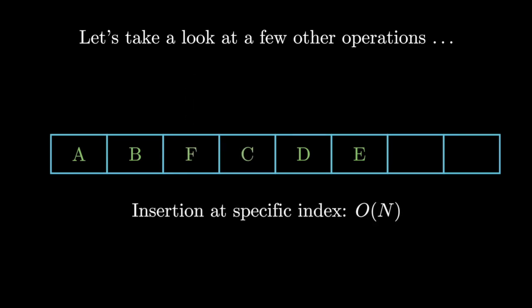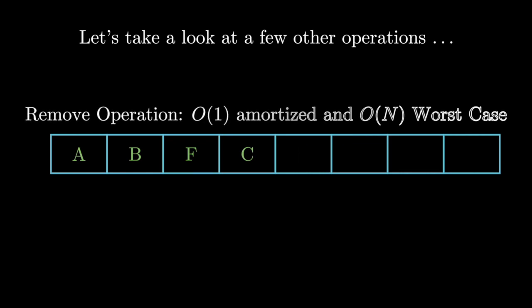Another important feature is removing elements, which really end up working exactly like insertions. We can remove elements from the end of the array in O of one amortized time and O of n worst case. The O of n comes from the fact that dynamic arrays don't want to waste too much space.